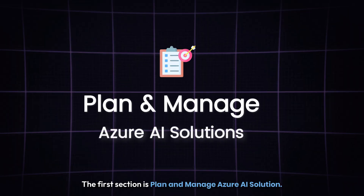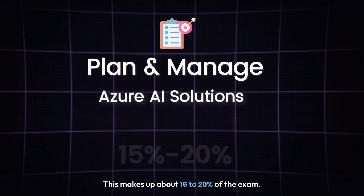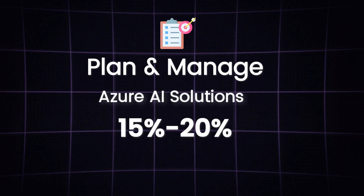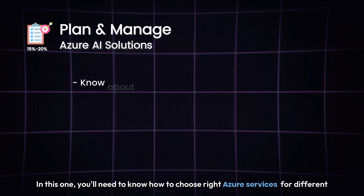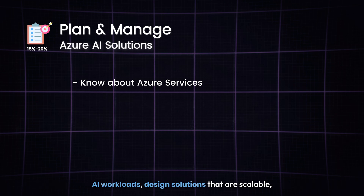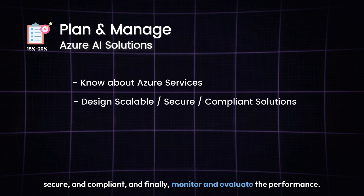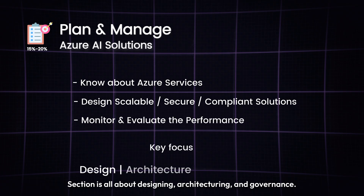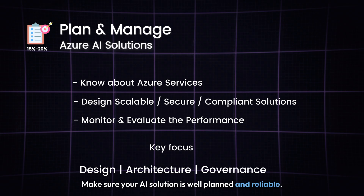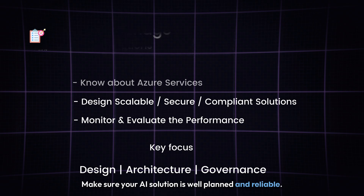The first section is Plan and Manage Azure AI Solutions. This makes up about 15 to 20% of the exam. You'll need to know how to choose the right Azure services for different AI workloads, design solutions that are scalable, secure, and compliant, and monitor and evaluate performance. This section is all about designing, architecting, and governance — making sure your AI solution is well planned and reliable.